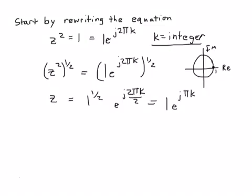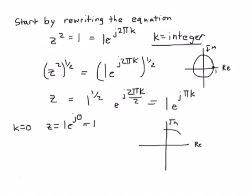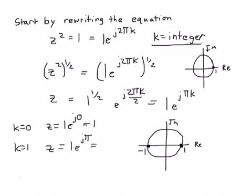Let's sketch the solutions. If k is equal to zero, we get z is equal to one e to the j zero, which reduces to just one. We can plot our solutions in the complex plane — I'll draw my unit circle and one is right here. Then if k is equal to one, we get z is equal to one e to the j pi, which is on the circle of radius one, located pi radians around, so it's right here — that's minus one, since e to the j pi is minus one.